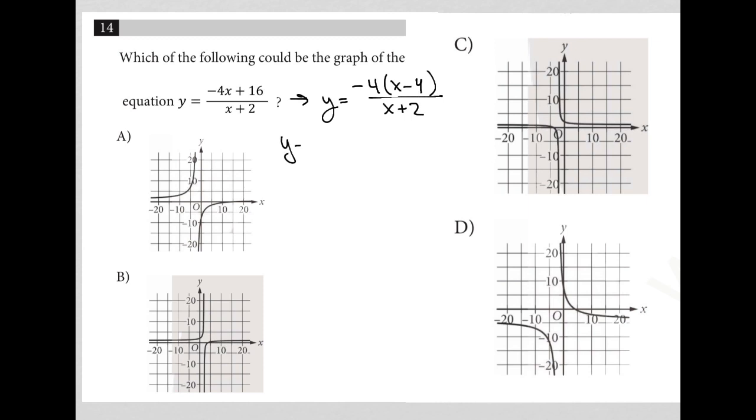So, the y-intercept is when x equals 0. If x were equal to 0, here, I'd end up with y equals negative 4. In fact, let's just use the original one.